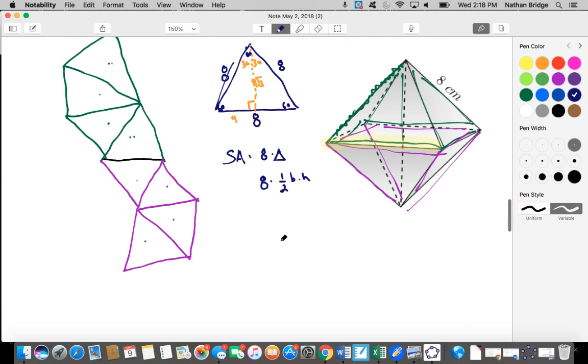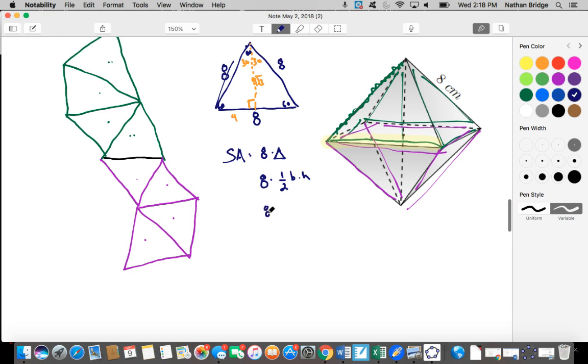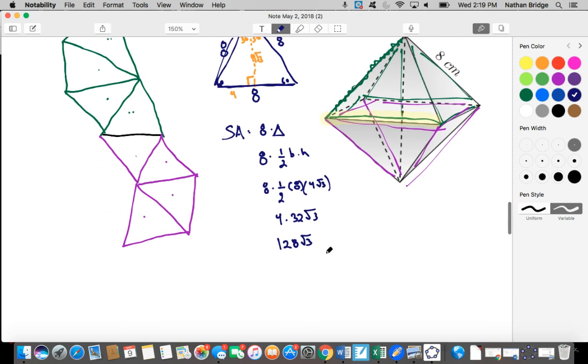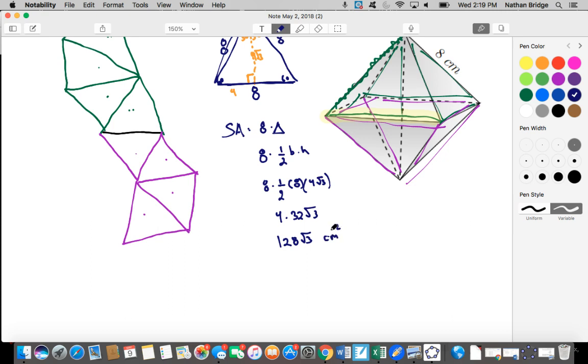So now we're left with that last step of plugging in our values. We know we have eight. That's the number of triangles we're talking about. Eight times one half the base, which is eight, not four. The base is the entire length here, times the height, which is four root three. So in other words, what we have here, doing some quick math, that's four times 32 root three. And four times 32 is 128 root three. So the answer is 128 root three centimeters squared.